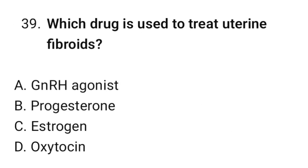Question number thirty-nine: Which drug is used to treat uterine fibroids? The correct option is D. All of the above. The correct option is A. GnRH agonist.